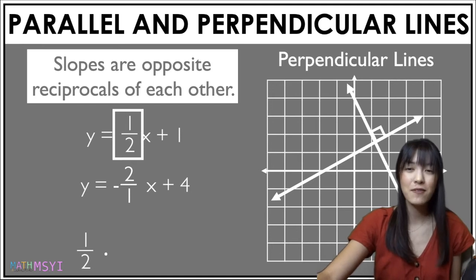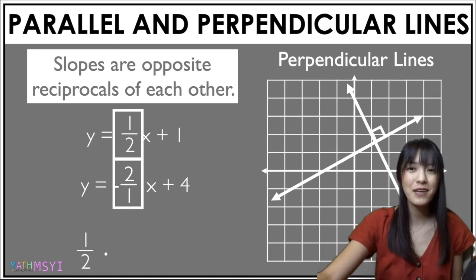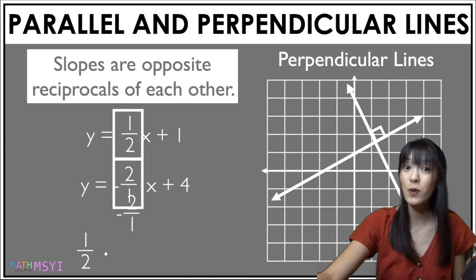So we can take the slopes of the lines here, one half and negative two over one or just negative two, and it does give us a product of negative one.